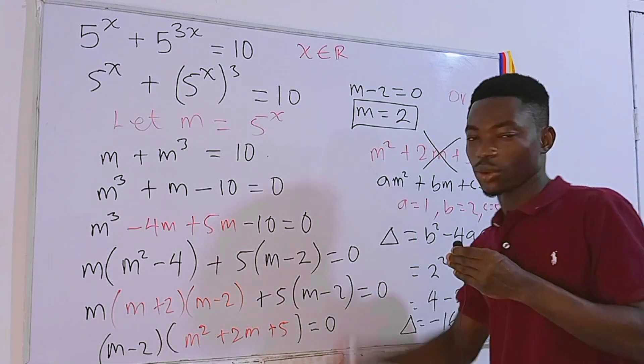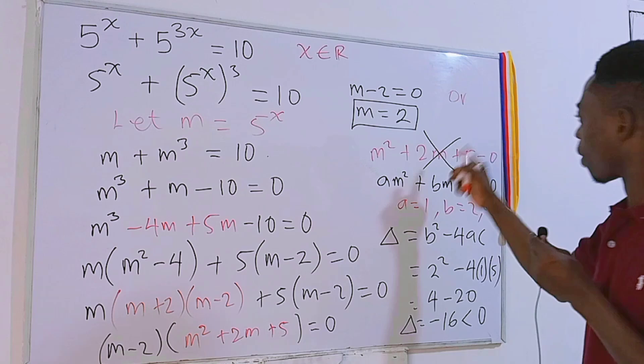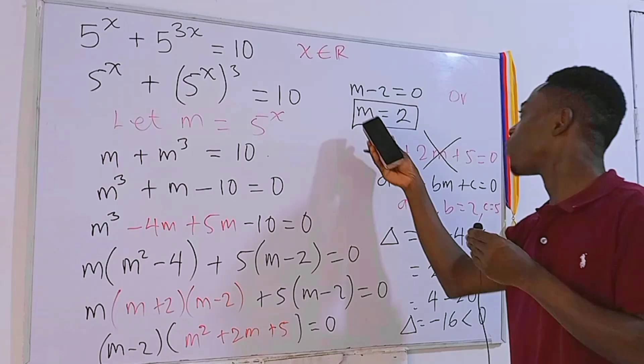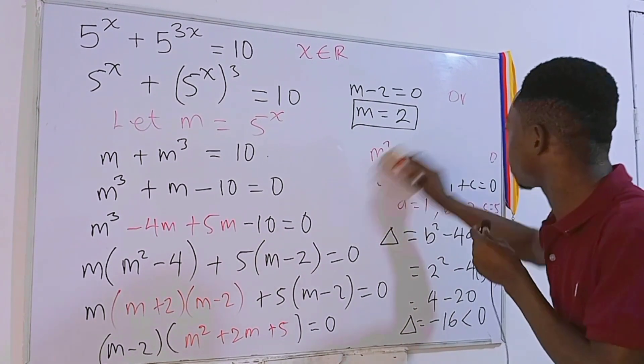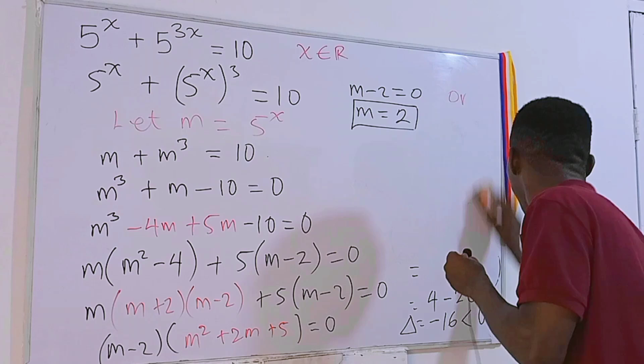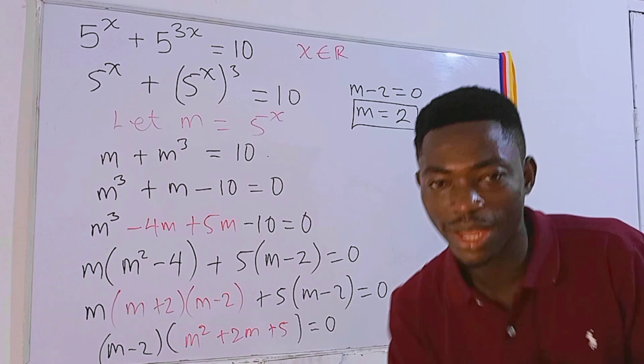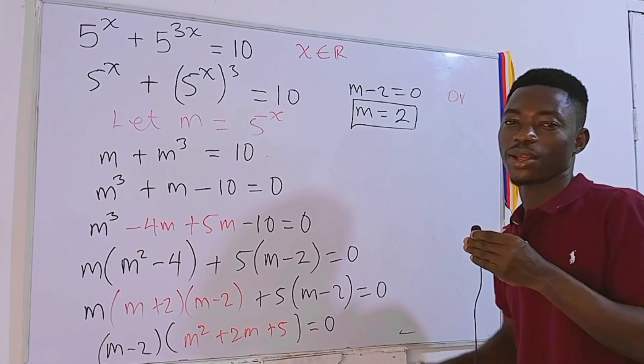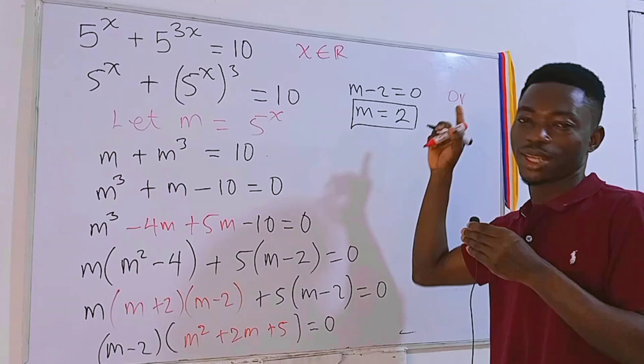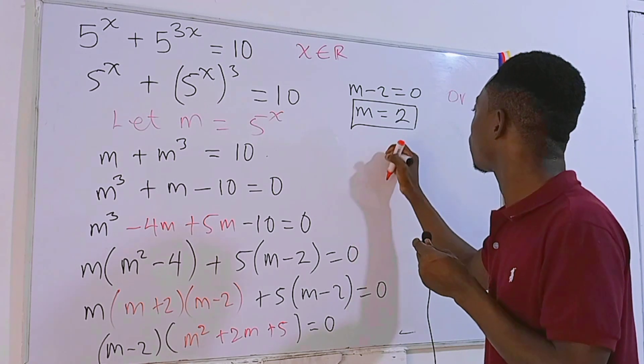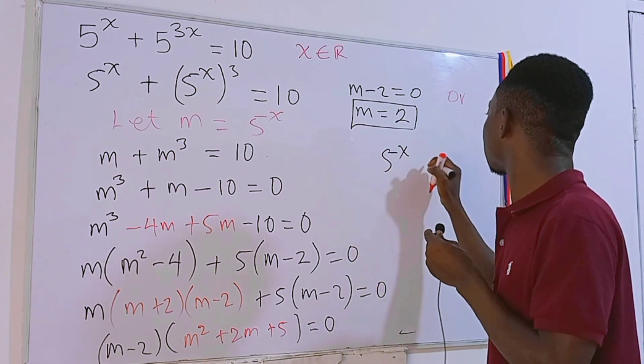The fact that this is less than 0 means that we cannot have real roots for this quadratic equation. So ladies and gentlemen, our answer for m is just m = 2. Now remember, don't just end here because a lot of people make such mistakes. After getting m, they just end here. We are looking for x, not m.